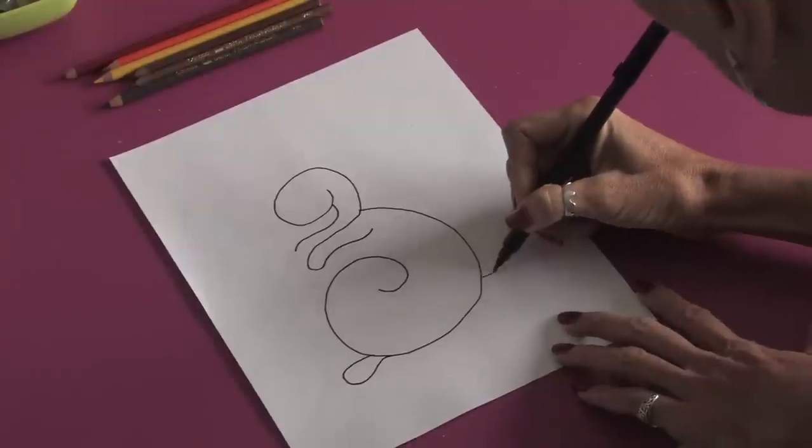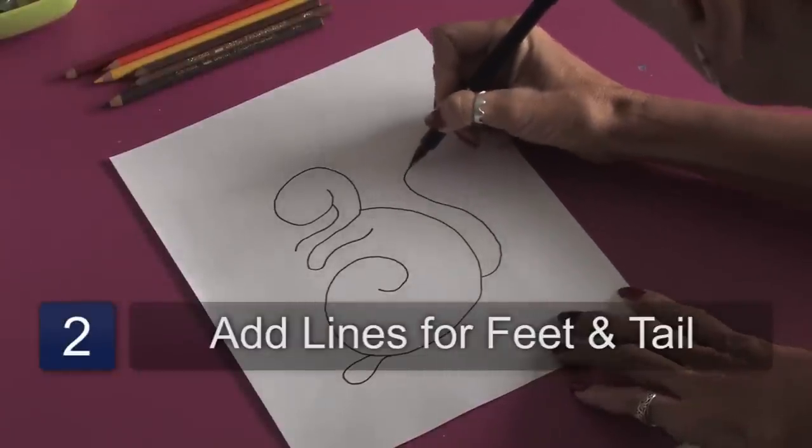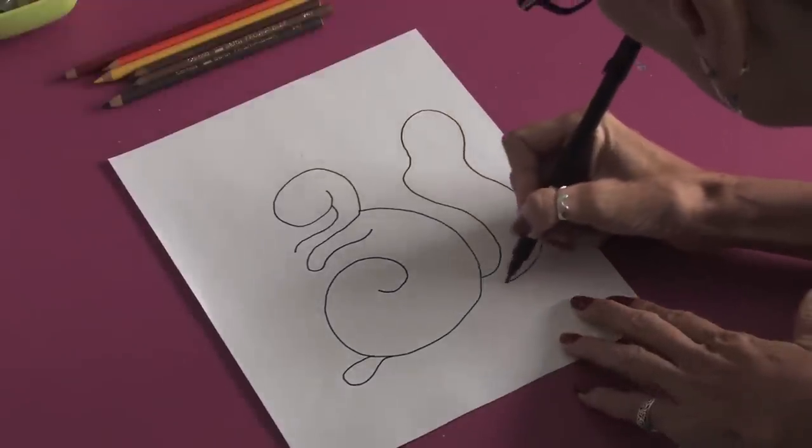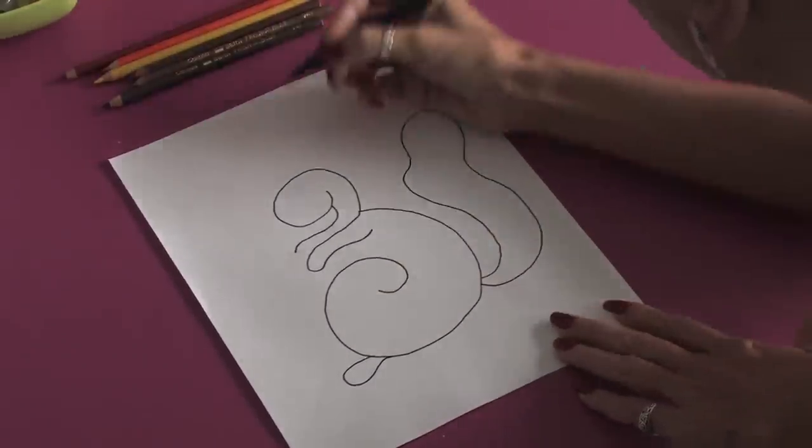Then we're going to do another big long swirly shape up and down, curve around, and come back down around here to create the bushy tail.